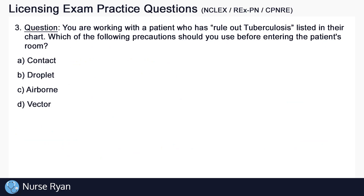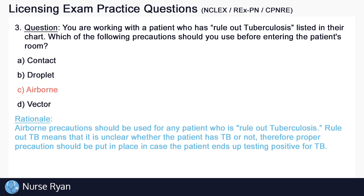Question number three: you are working with a patient who has rule-out tuberculosis listed in their chart. Which of the following precautions should you use before entering the patient's room? The answer is C — airborne. Airborne precautions should be used for any patient who has rule-out tuberculosis. Rule-out TB means it is unclear whether or not the patient has TB; therefore, proper precautions should be put in place in case the patient ends up testing positive.